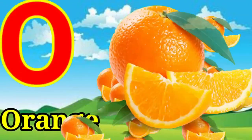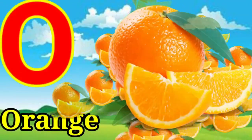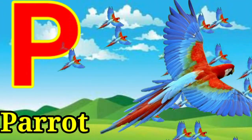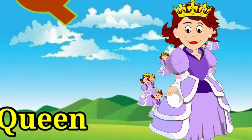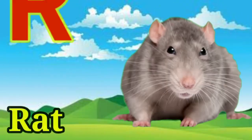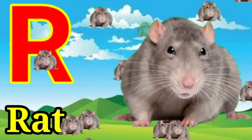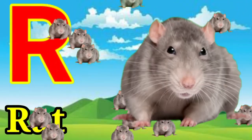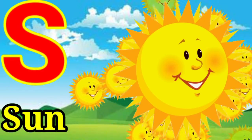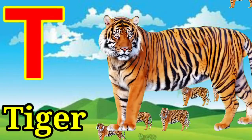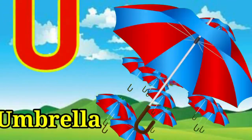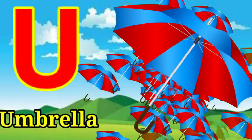N for nest, O for orange, P for parrot, Q for queen, R for rat, S for sun, T for tiger, U for umbrella.